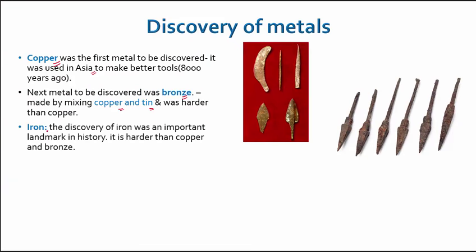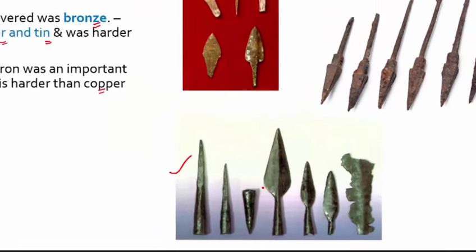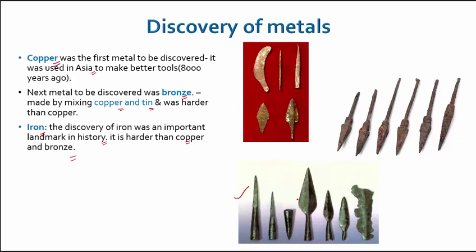Then came iron. The discovery of iron was a very important landmark in history — it is a lot harder than copper and bronze. Iron tools are pretty strong and sturdy, and their structure is a lot more clear and well-cut when compared to copper and bronze. The discovery of iron helped humans progress faster.